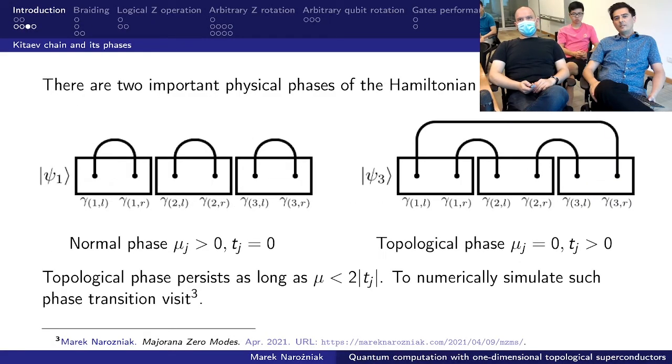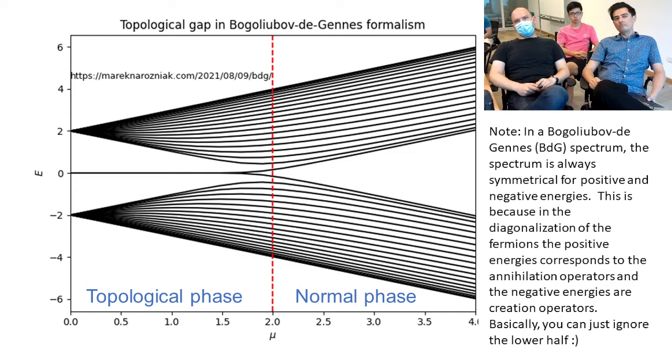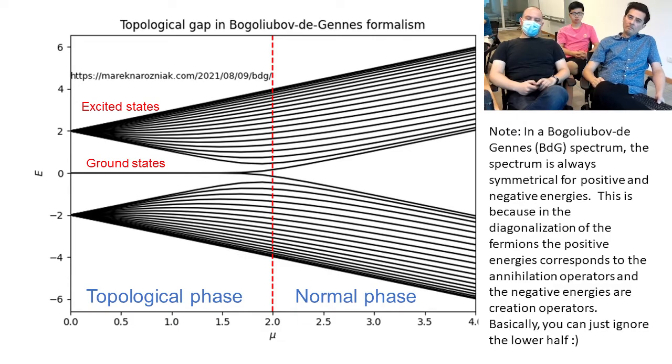Yeah. So there are those two important phases of the system. And they are the ground states of Kitayev-Chain-Hamiltonian under different parameter regimes. So those two phases of the Kitayev-Chain-Hamiltonian differ from perspective of their energy spectrum. The topological phase has a huge energy difference between excited states and the ground states. And this energy difference is the source of the topological error protection. Because the ground states encode the logical space.